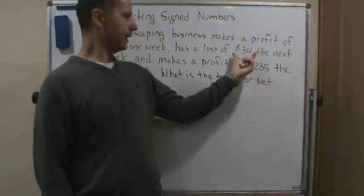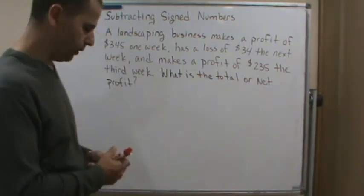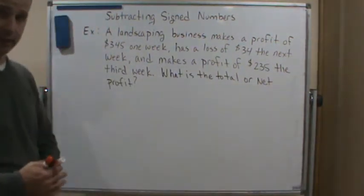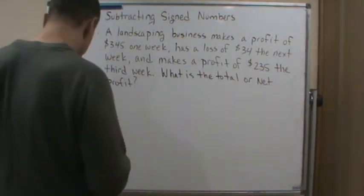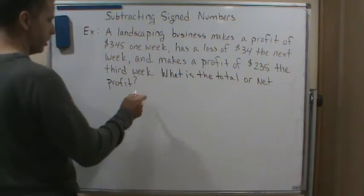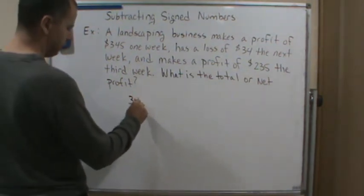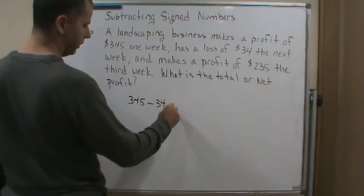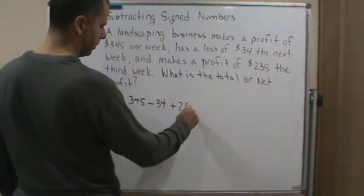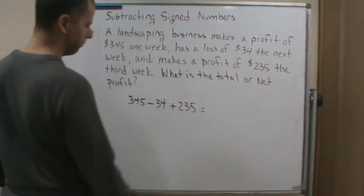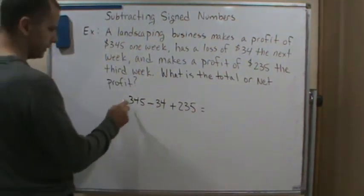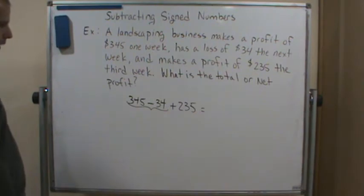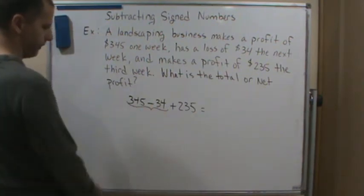To answer the question — what is the total or net profit — we add up the positive and negative numbers. So that's 345 minus 34 plus 235. We can start by subtracting 34 from 345.